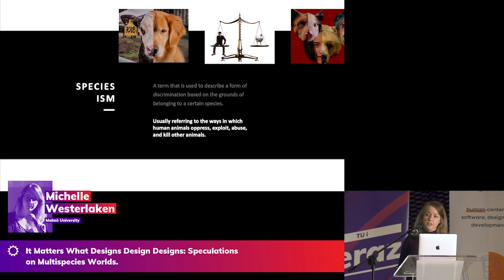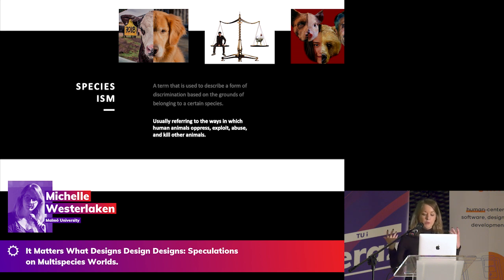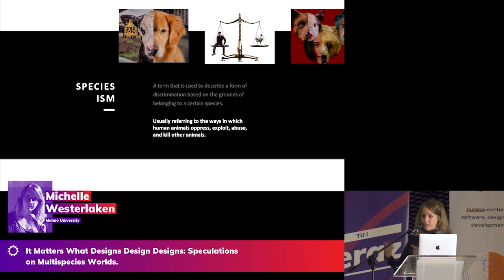Singer argues that discrimination on the grounds of belonging to a certain species is wrong — giving more value to a human being is not more justified than discrimination based on gender, class, or skin color. He's trying to align speciesism with other forms of oppression, putting it on the agenda alongside classism, sexism, and racism. So we have speciesism as well.